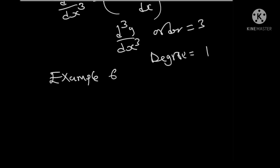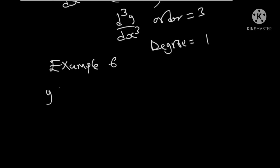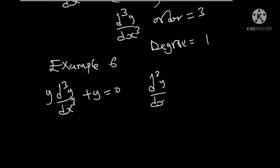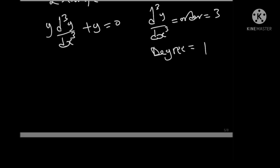Example 6: suppose we have y times (d cubed y over dx cubed) plus y equals to 0. In this differential equation, we only have one differential coefficient: d cubed y over dx cubed. Therefore, the order is 3 and the degree is 1, because it is raised to power 1.